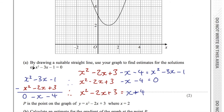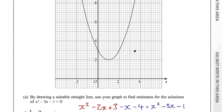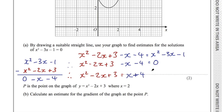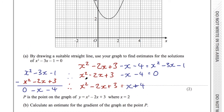So when x squared minus 3x minus 1 equals 0, x squared minus 2x plus 3 equals x plus 4. This is the equation of the curve, and x plus 4 is the equation of a straight line. When that curve equals the straight line — when the straight line cuts the curve — those are the solutions. So let's go ahead and graph this straight line.